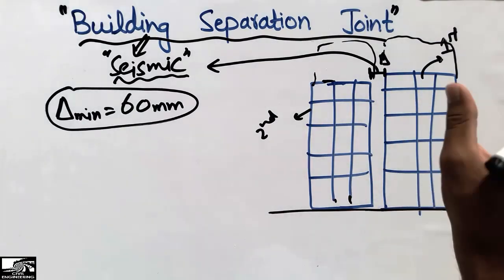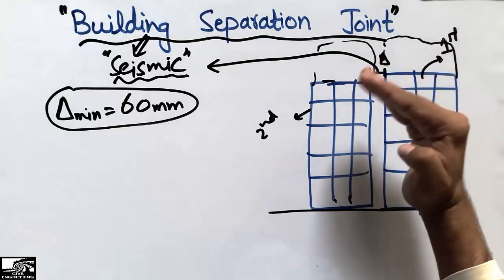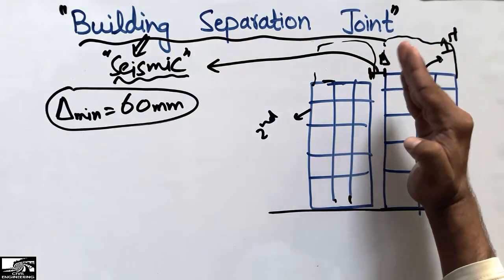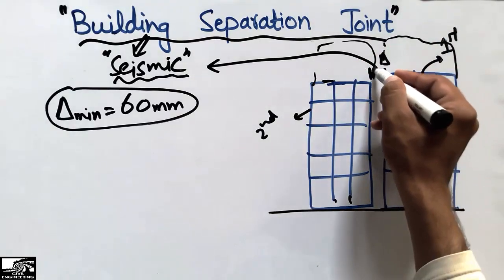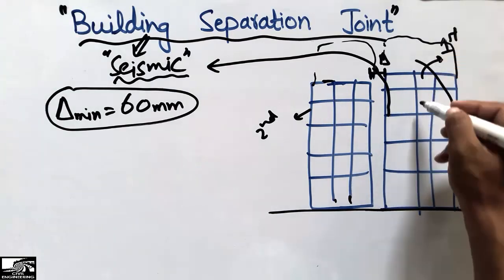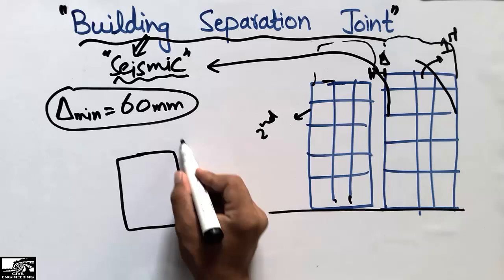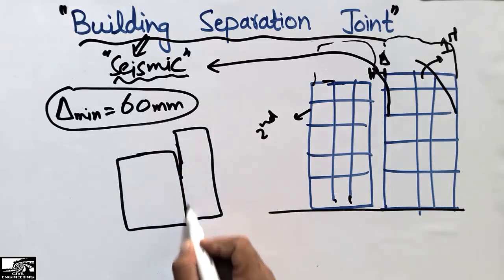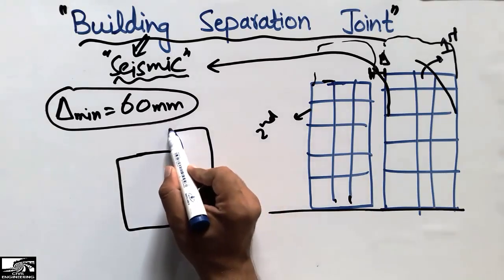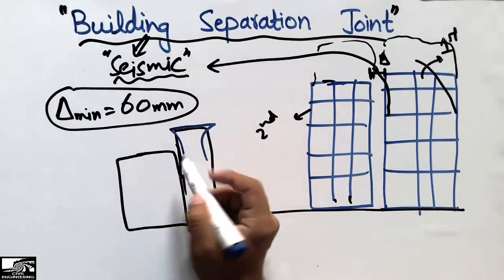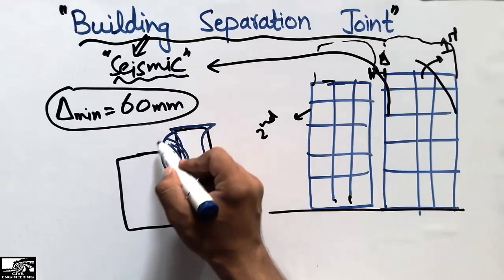This distance must be provided because during an earthquake, the building will move — it will sway in this direction and that direction. If there was no joint between the buildings, for example this first building and this second building with no gap, during the earthquake this building will move in a swaying frame motion and might hit the adjacent building, causing it to collapse.